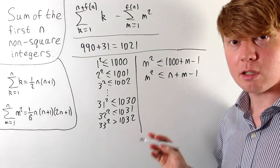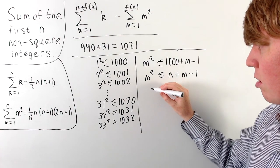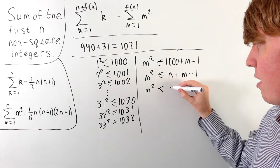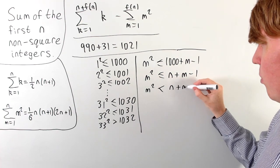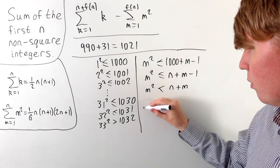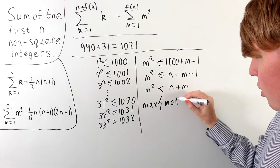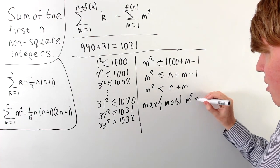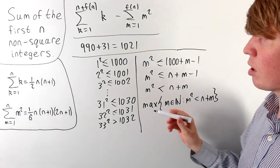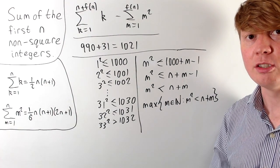So we're looking for the maximum positive integer m such that m² is strictly less than n + m. This gives us our function f(n), which solves the problem in general.